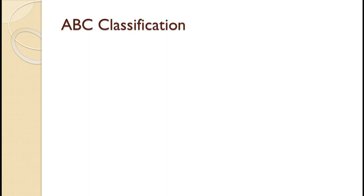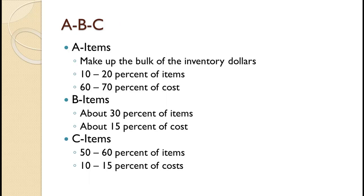In this tutorial we will see how to use the ABC inventory classification. A inventory items are those items that make up the bulk of the dollars tied up in inventory. While they take up the bulk of the inventory dollars, they are generally a small percentage of the inventory count.